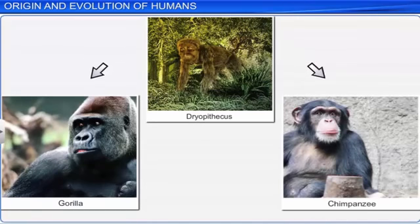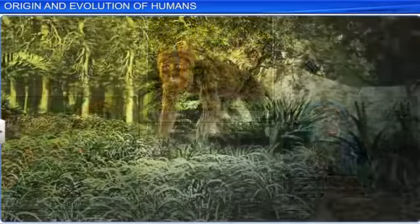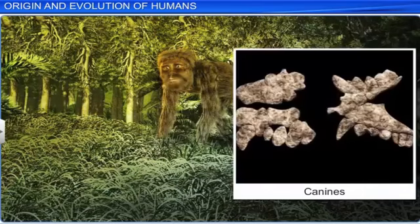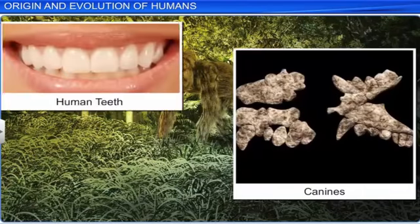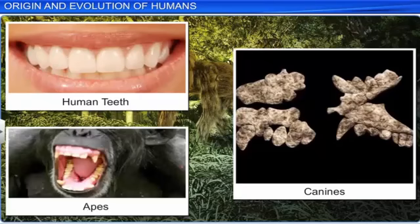For example, the canines of Dryopithecus were larger than those of human beings, but they were not as strongly developed as those of the apes today. The structure of its limbs suggests that it walked like the chimpanzee, but used the palm of its hands to walk and did not use the support of its knuckles.